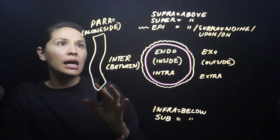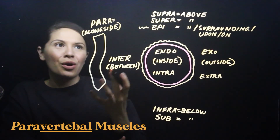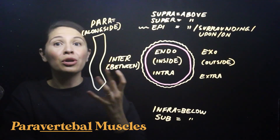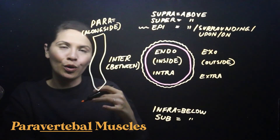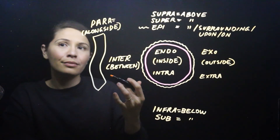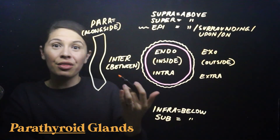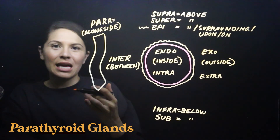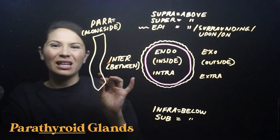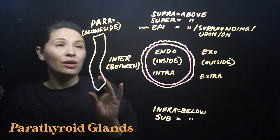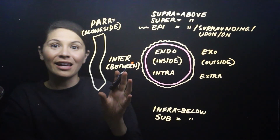An example of para is paravertebral muscles — muscles that are alongside the vertebral column or spinal column. Another example is parathyroid glands — small glands located on the lateral aspect of the thyroid gland on the back, alongside the thyroid gland.